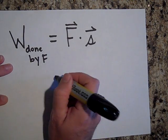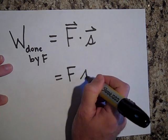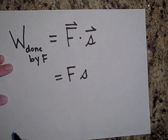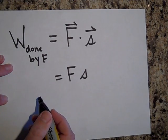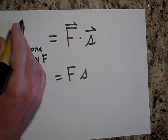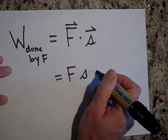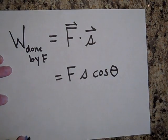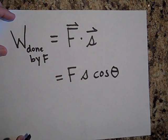A dot product always becomes F times S — I'll use magnitudes rather than vectors, and work is a scalar quantity so there's no vector over it — times the cosine of theta. If you're wondering where that comes from, go back and look at the video on dot products and you'll see where it comes from: F·S times the cosine of theta.